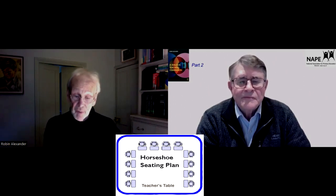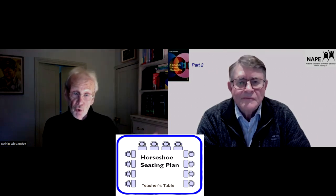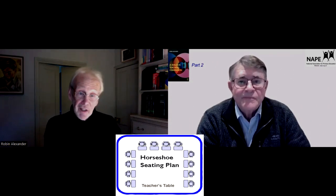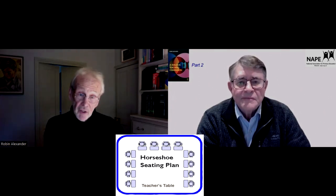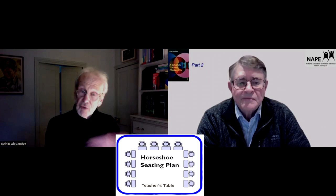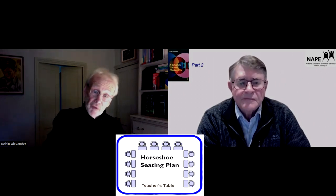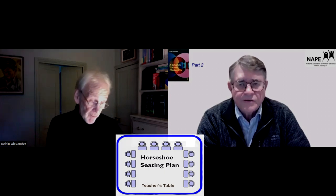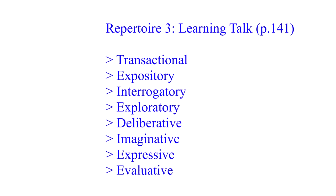The third arrangement is the horseshoe, which was particularly fostered in Barking and Dagenham in the mid-1990s following work done in Germany and Switzerland. It's an excellent arrangement because it's the most flexible. You have a three-sided horseshoe with the teacher on the fourth side — all the children are facing each other, immediately signaling it's a collective and reciprocal operation. It can work for whole-class teaching, individual conversations between pairs, or group work by simply bringing chairs around the inside.